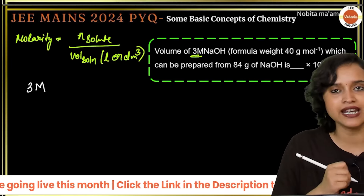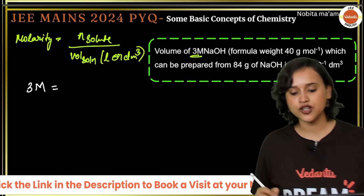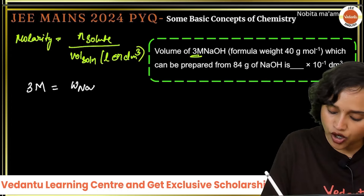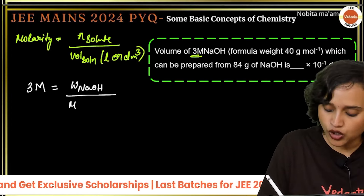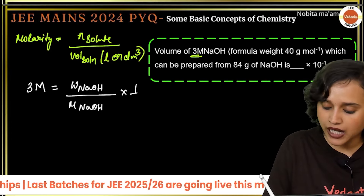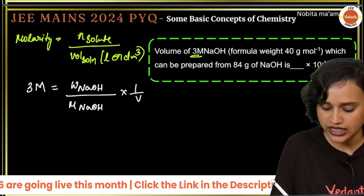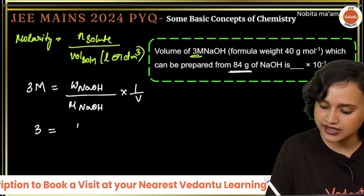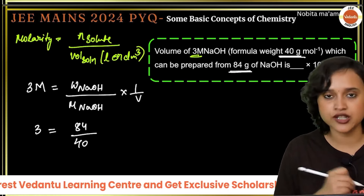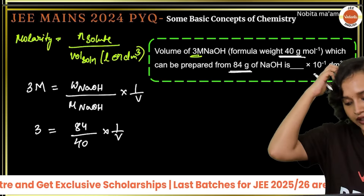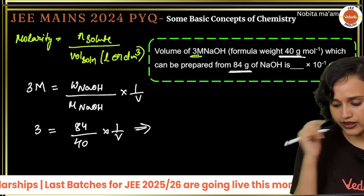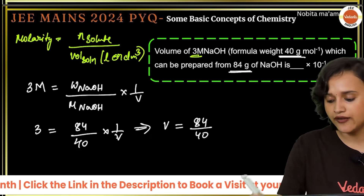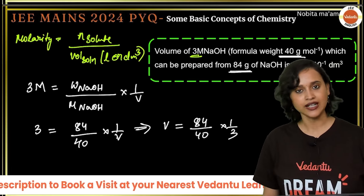Substituting: 3 = (84 / 40) × (1/V). Solving for V: V = 84 / (40 × 3) = 84/120 = 7/10 = 0.7 dm³. This can be written as 7 × 10⁻¹ dm³. So 7 is your correct answer.